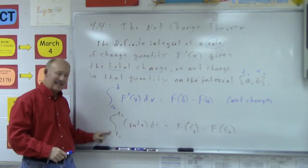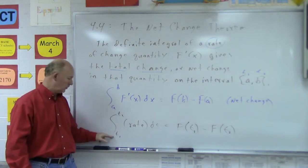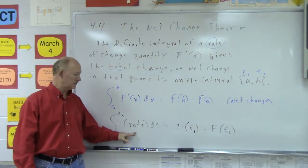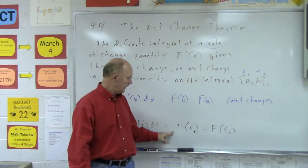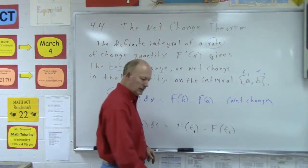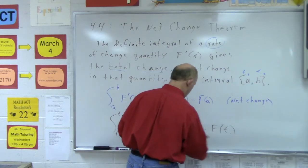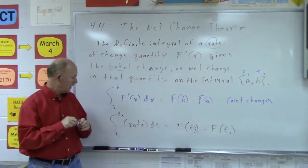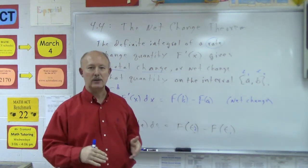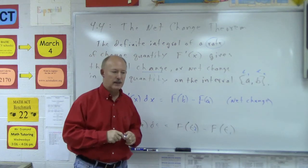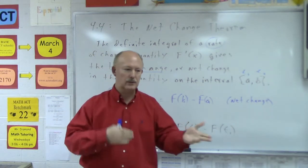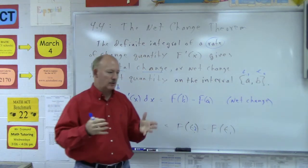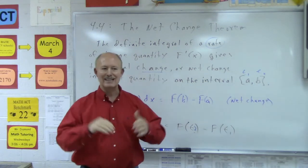Some textbooks write it with t1 as your lower bound and t2 as your upper bound. You're integrating a rate, which gives you F(t2) minus F(t1), and once again this gives us our net change over a particular time interval. We're going to look at two examples today. These net change problems are pretty much all set up the same way, but you do have to use your skills for evaluating the definite integral.